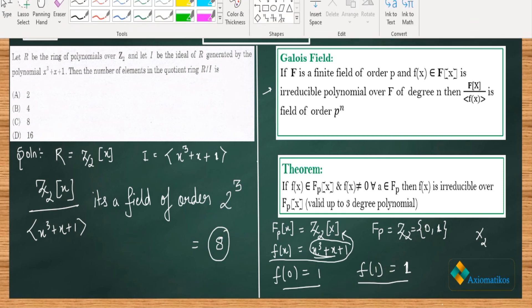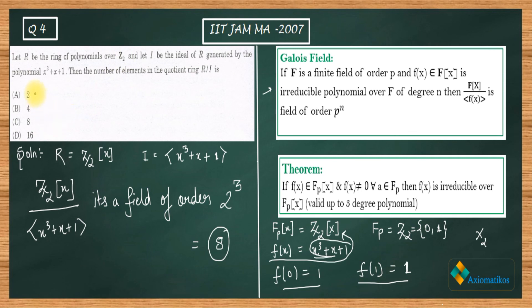So the answer is 8, which corresponds to option C. Options B and D are incorrect. To summarize: I explicitly used two results — first, the irreducibility test valid for up to degree-3 polynomials, and second, the Galois field order formula. Using these two results together we can figure out the answer directly. Thank you.